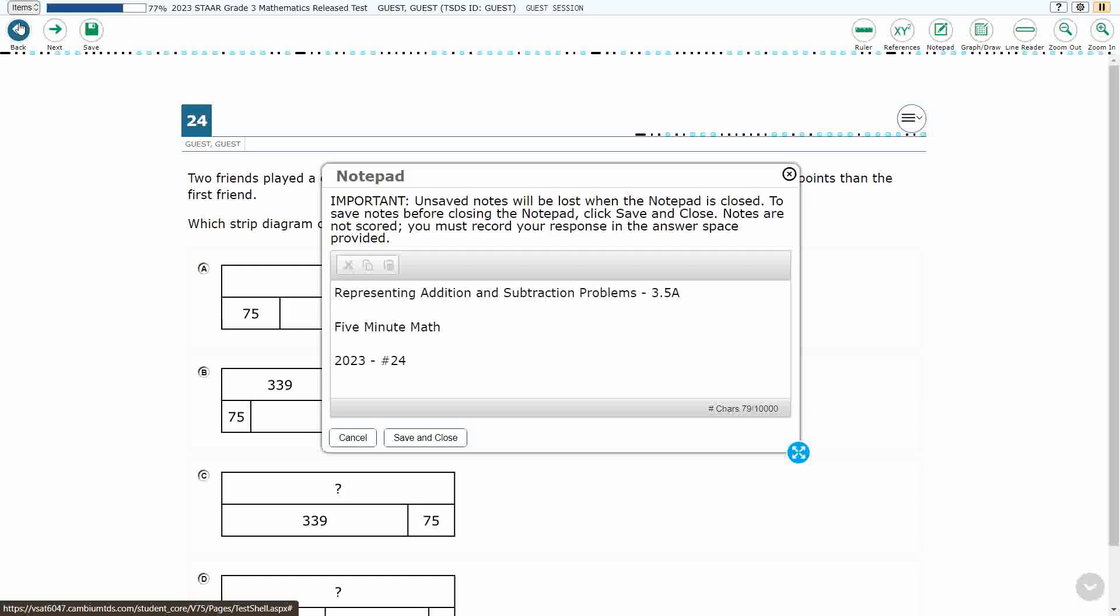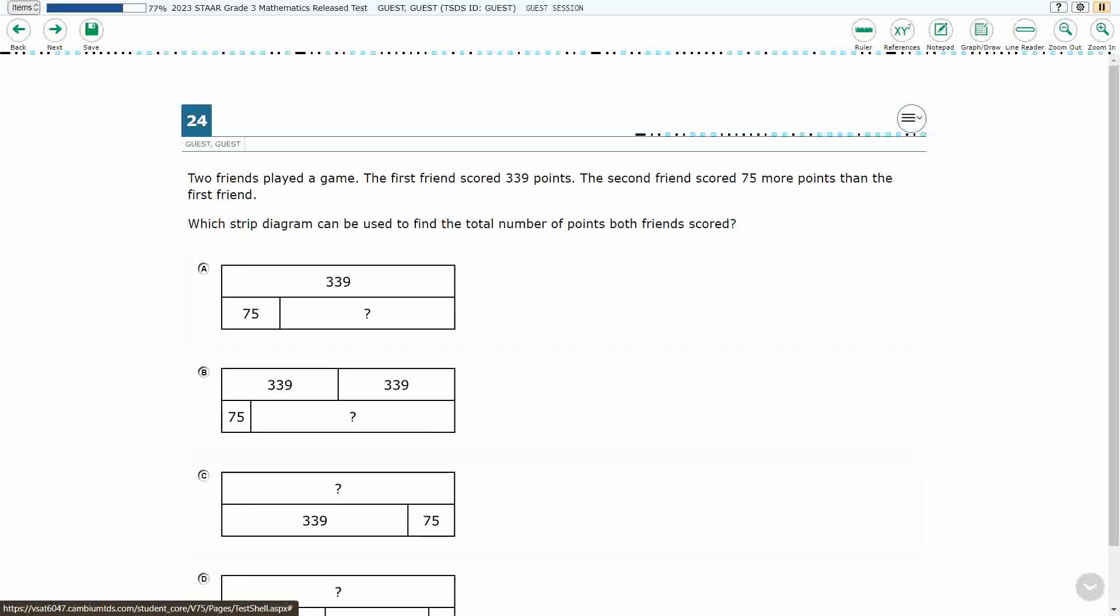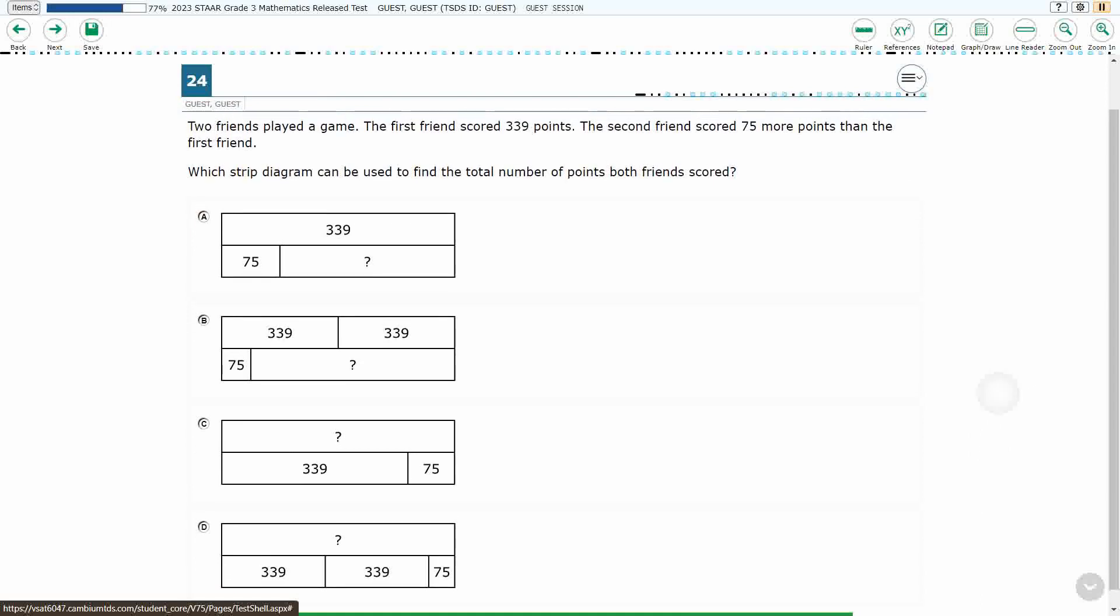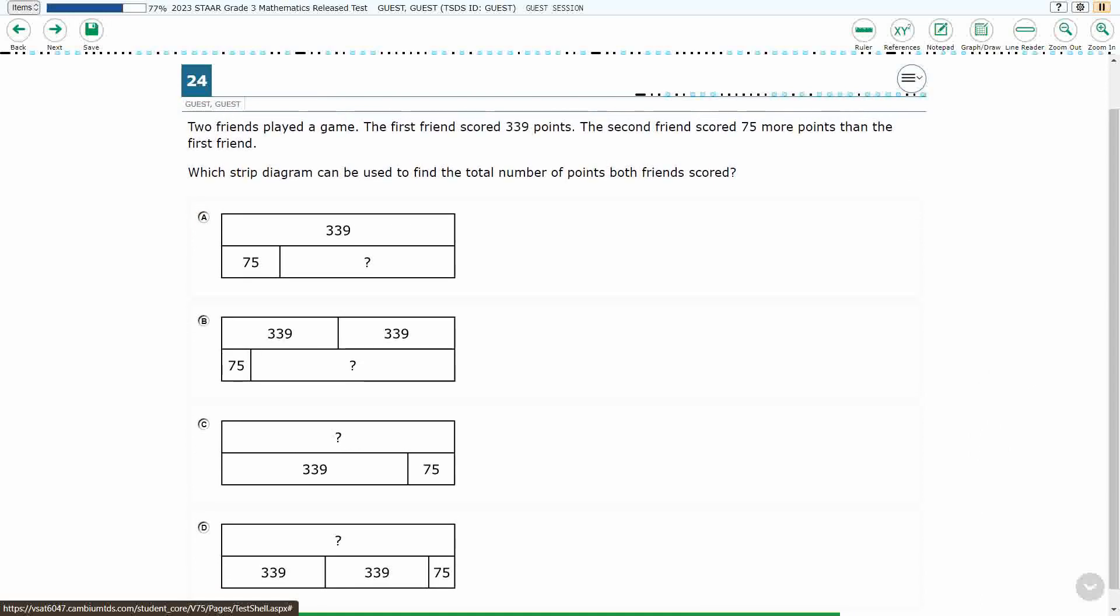Hello, and welcome to 5-Minute Math. Today we are looking at the third grade concept of representing addition and subtraction problems. This is standard 3.5a in the great state of Texas, and we're using item number 24 of the 2023 released STAR test. If you haven't done so already, please go ahead and take a moment to pause the video, work this problem out on your own, unpause it, and we will look at our answers together.